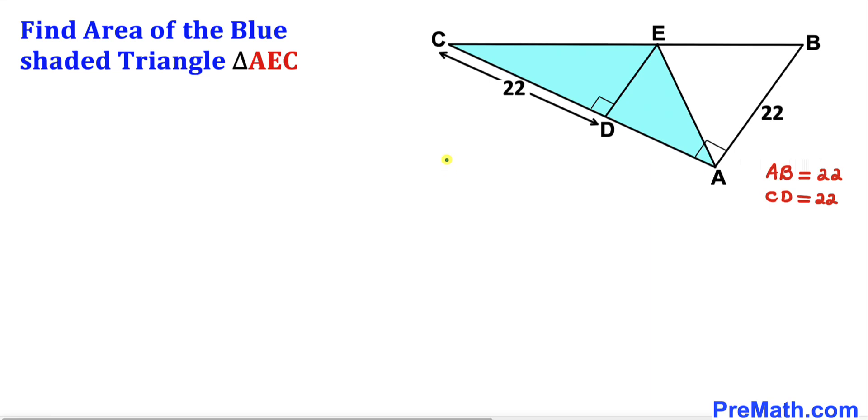Welcome to PreMath. In this video, we have this big right triangle ABC as you can see in this diagram, such that side length AB equals 22 units and side length CD is 22 units as well.